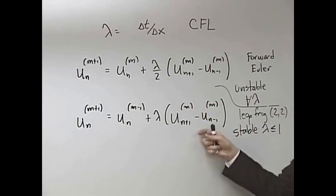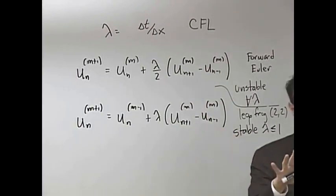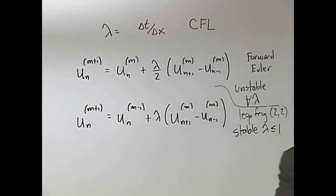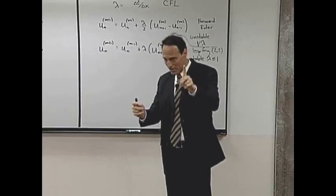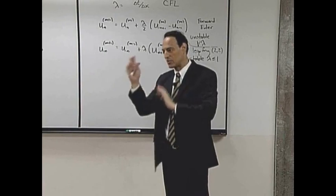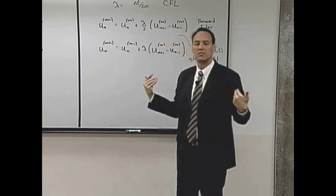Now that you have a scheme that is stable, you already know what the accuracy properties are, because you pick delta t and you pick delta x, so you can determine accuracy. You pick delta t and delta x because you know that the scheme is delta t squared accurate and delta x squared accurate.